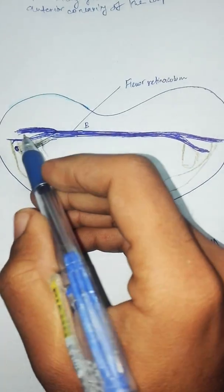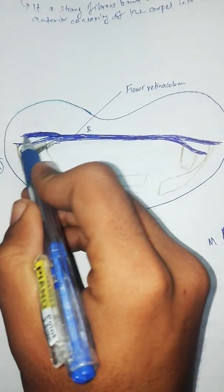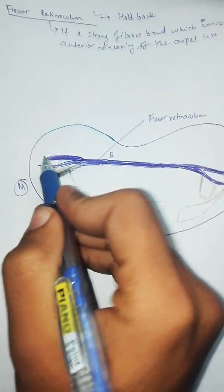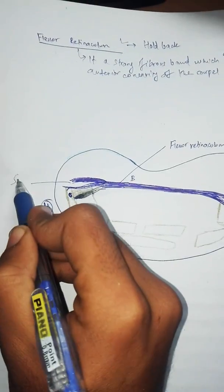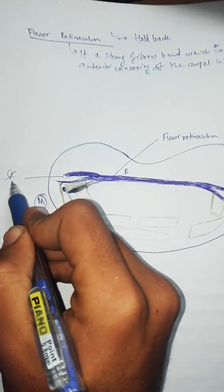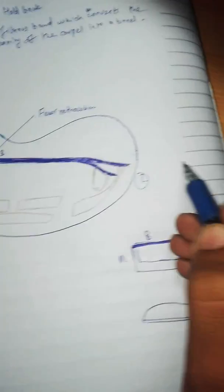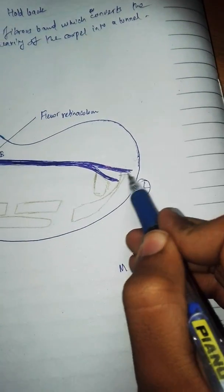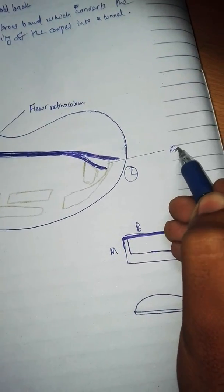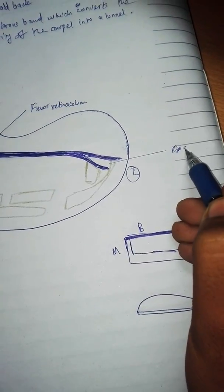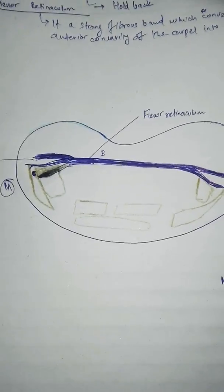There are two slips of the flexor retinaculum: the superficial slip and the deep slip.